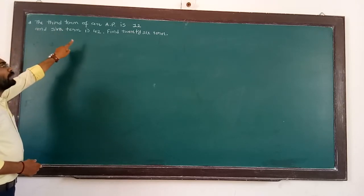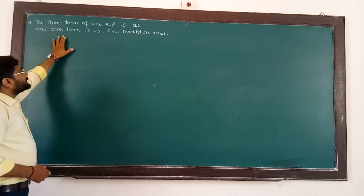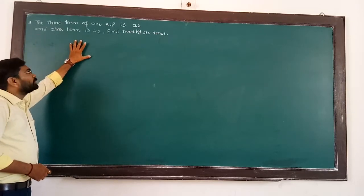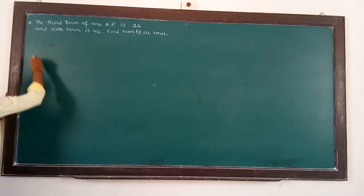Here the third term of an AP is 12, and the sixth term is 42. We can find the 26th term of the arithmetic progression.